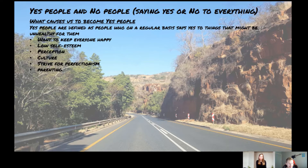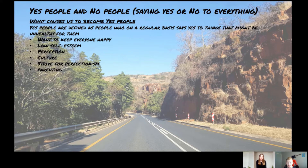Other causes include a strive for perfectionism and parenting. If somebody doesn't take responsibility for themselves and you go out of your way to make that person happy, even though it might not be your responsibility — as mentioned previously, you are responsible for what is you. Everything else that's not you, you're not responsible for. You are responsible for your happiness, nobody else's.